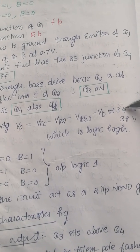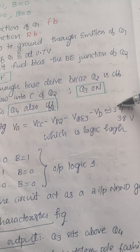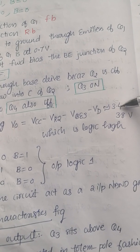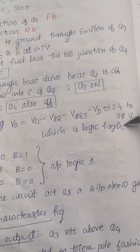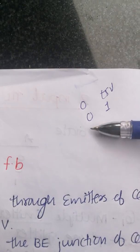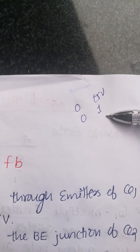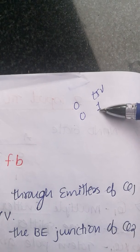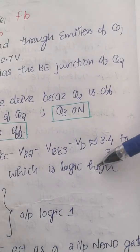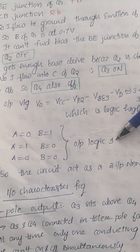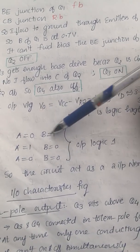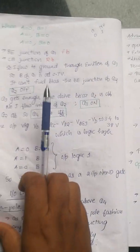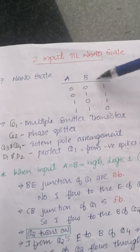The output of 3.4 to 3.8V represents logic 1, since +5V is high and anything above 2.5V is considered logic high. This confirms the 2-input NAND gate output: when any input is 0, output is logic 1; when both inputs are 1, output is logic 0.